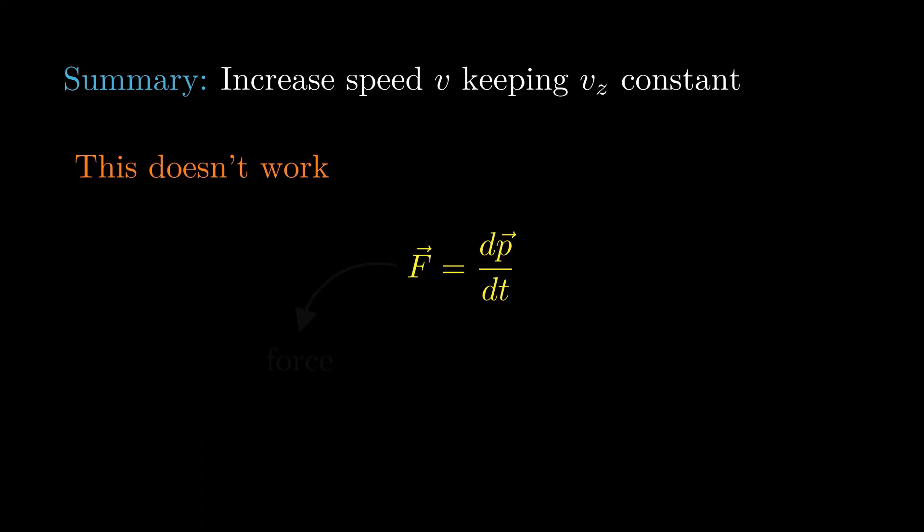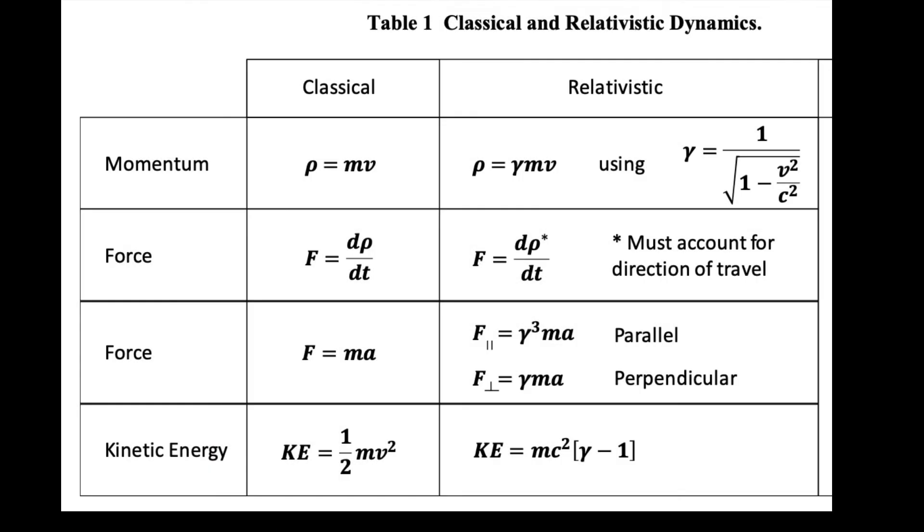The relativistic version of Newton's second law is F vector equals the time derivative of the momentum vector, where F vector is the relativistic three force. And as before, P vector is gamma times M times the velocity vector. In the case of the helical engine, the force is supplied by electric and magnetic fields. Note that none of these basic equations are in dispute. They're exactly as written in the NASA technical report.